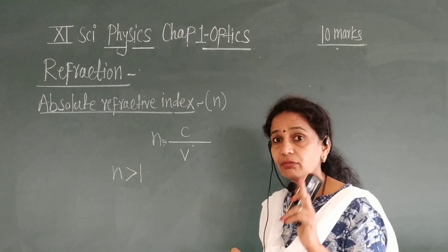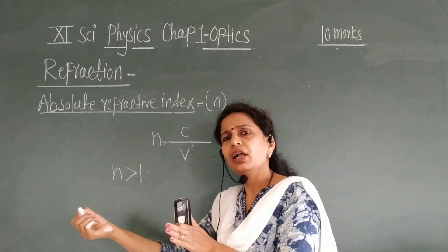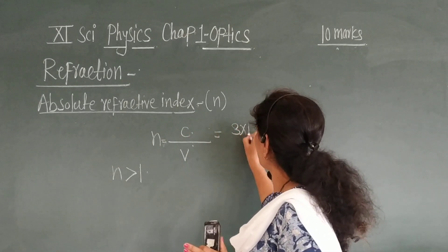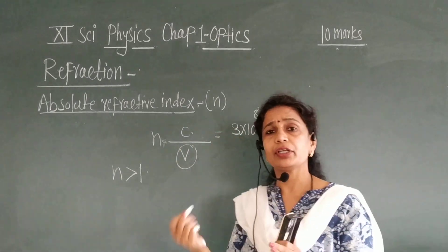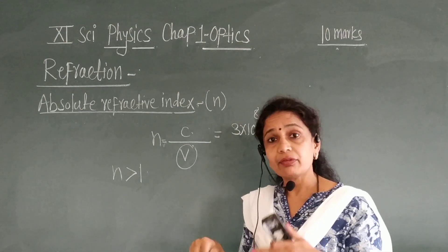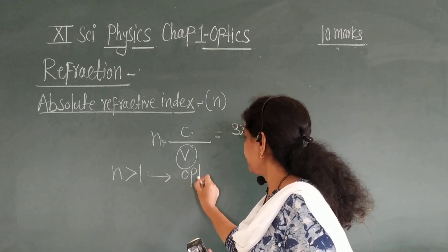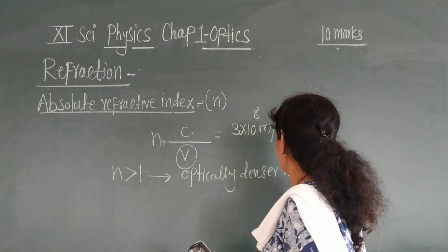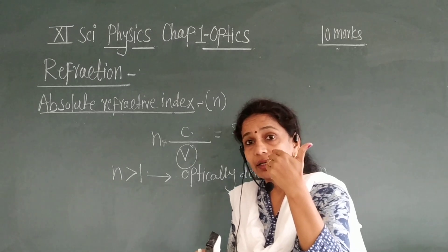N is always greater than 1, because the velocity of light in vacuum is 3 × 10⁸ m/s, which is always greater than its velocity in any medium. When N is greater than 1, that medium is an optically denser medium.